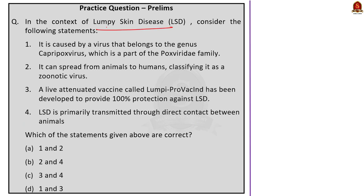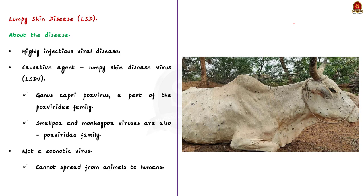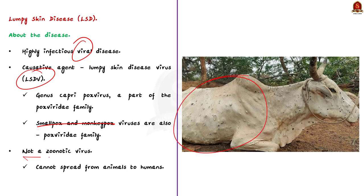In this question, they are asking about lumpy skin disease, which affected many cattle populations in northern India. Lumpy skin disease is a highly infectious viral disease that affects cattle and poses a threat to income and food security. It is caused by the lumpy skin disease virus (LSDV), which belongs to the genus Capripoxvirus and is part of the Poxviridae family. Note that smallpox and monkeypox viruses are also part of this family. An important point: LSDV is not a zoonotic virus, meaning the disease cannot spread from animals to humans.